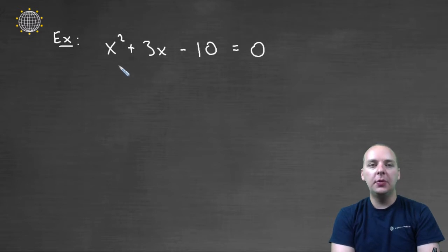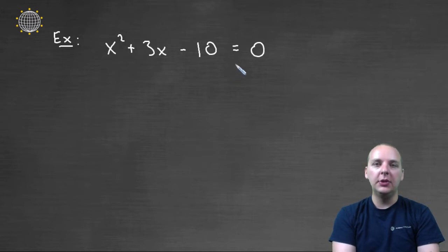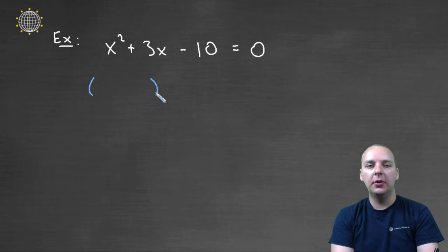So here's an example. We have x squared plus three x minus ten equals zero. I want to find the x's that make this equal zero, that make the equation be true. And so what I've done is I've already set this guy equal to zero, and we are going to try to factor the left hand side. I'm going to create a product here.